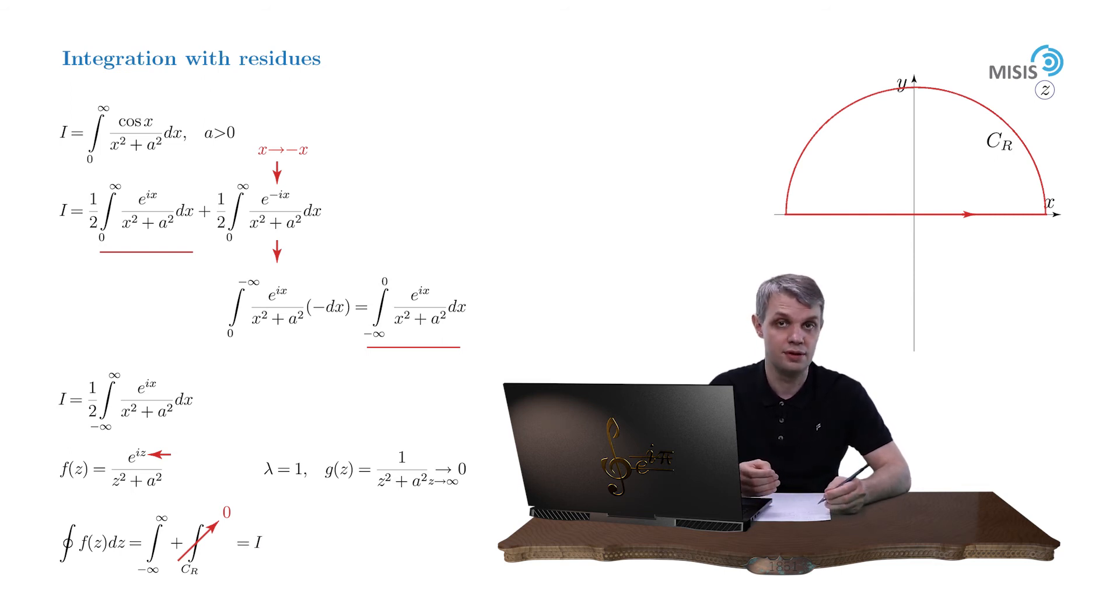And now we may employ the residue theorem to compute it. Our integral has two simple poles at points z equals plus minus iA. Only one of these poles is positioned inside our integration contour, namely iA. So let us compute the residue of our function at this point.